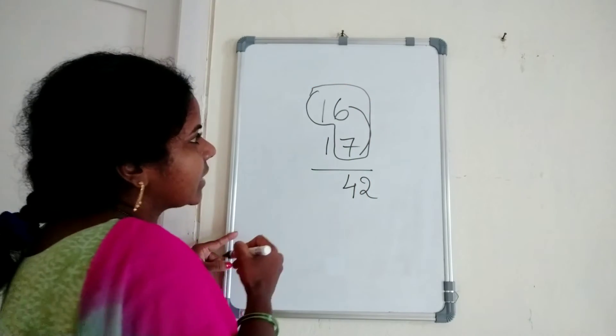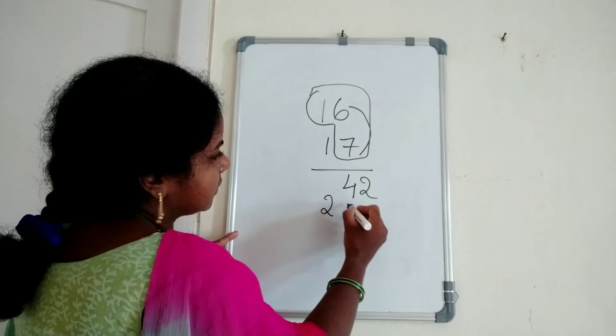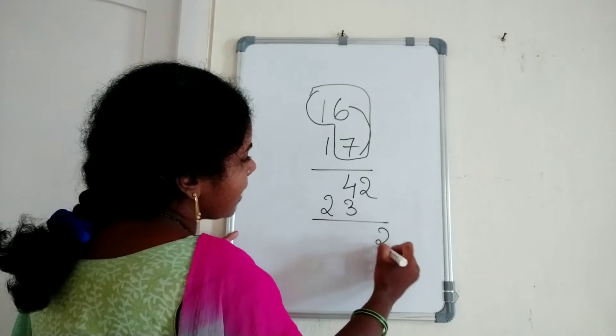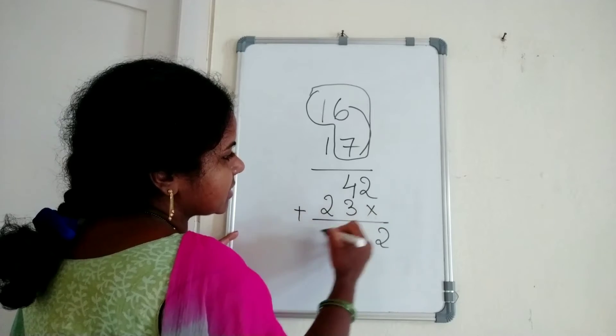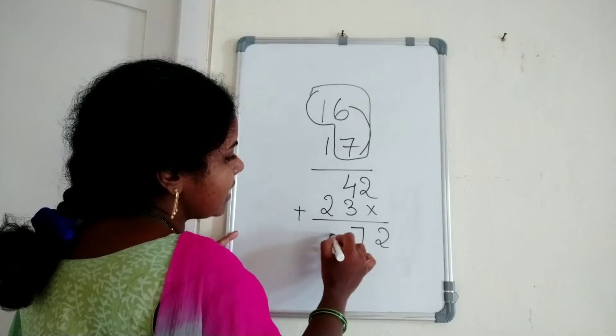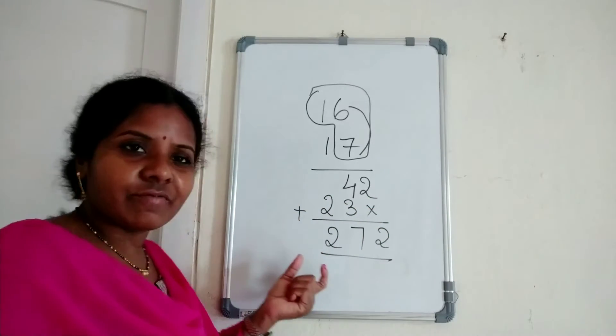16 plus 7 is 23. Leave the ones place number. 4 plus 3 equals 7, and here's 2. The answer is 272.